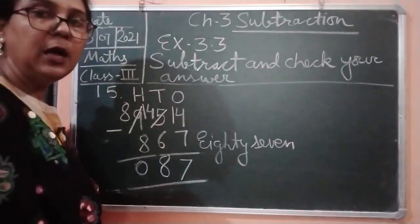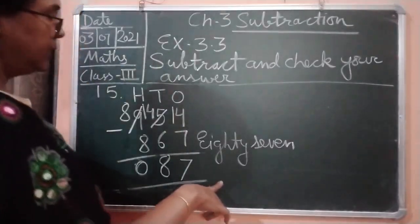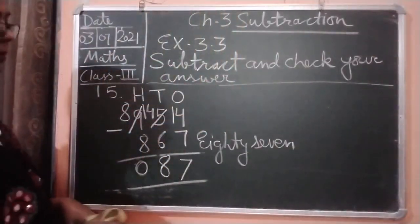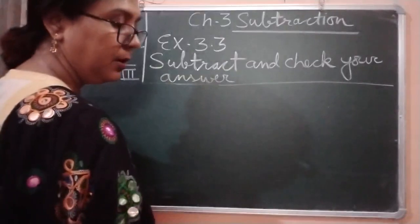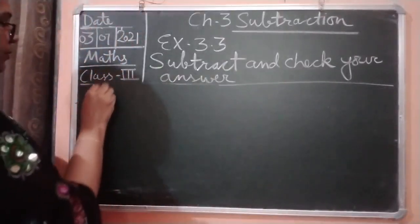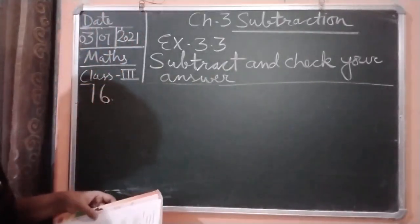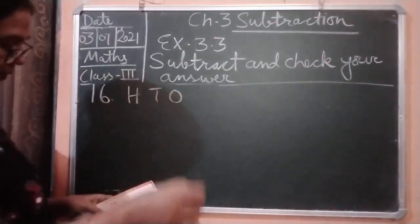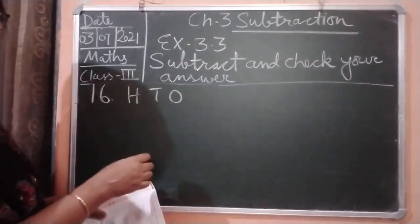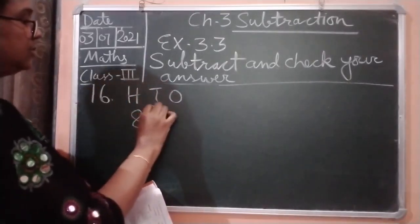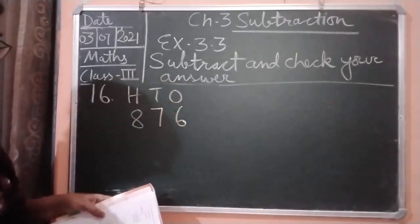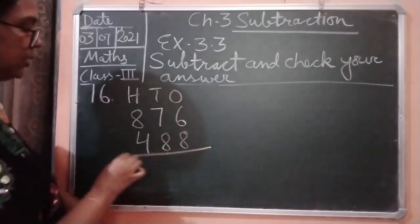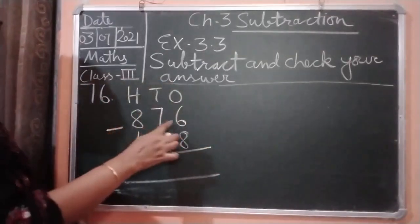Children, complete it. Now we are moving to question number 16. Again we have to write HTO. Then 876, and here 488. So let's subtract children.